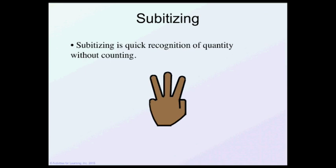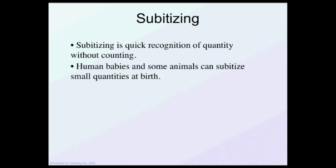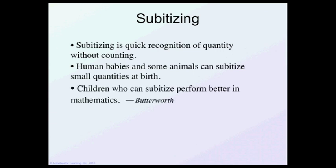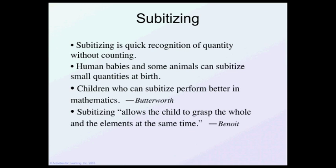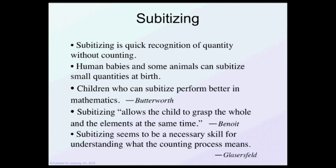Subitizing is the quick recognition of quantities without counting. So if I show this many fingers, how many are there? There's three. You don't have to count it. You can see that it's three. Human babies and some animals can subitize small quantities at birth. Children who subitize perform better in mathematics, so we want our children to be able to subitize.